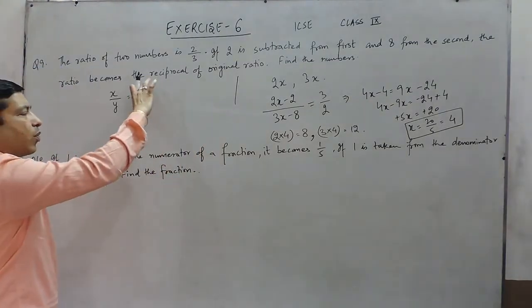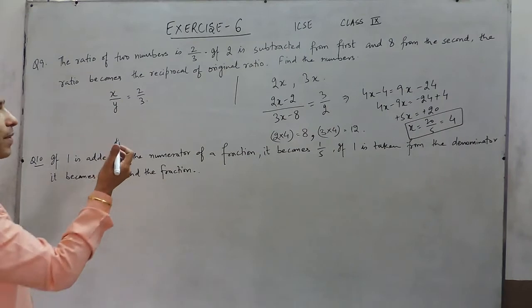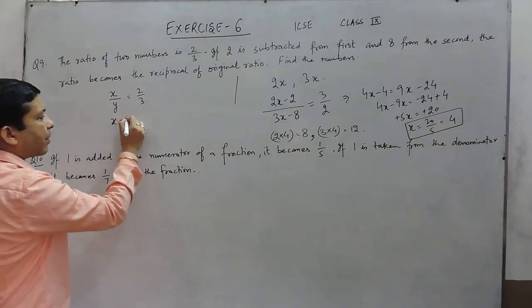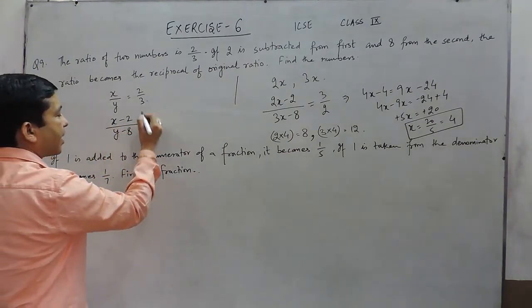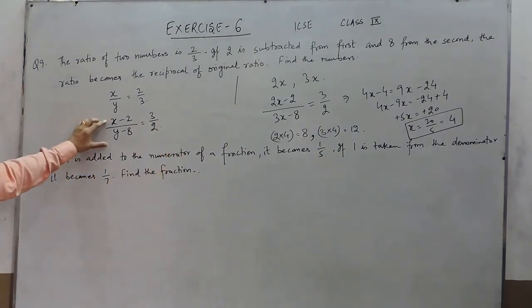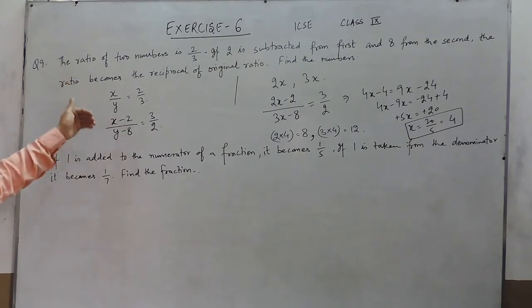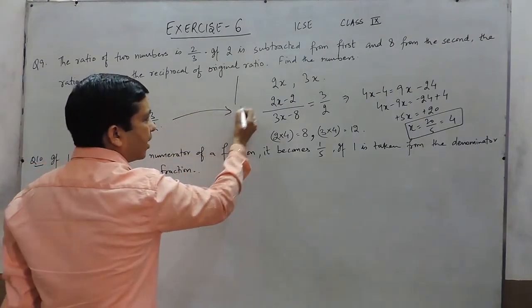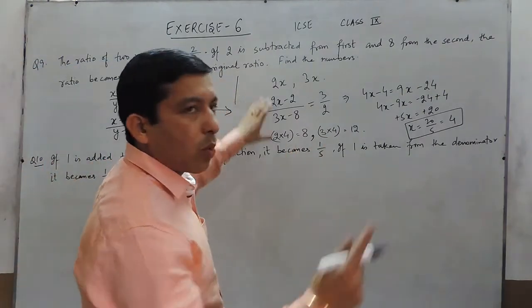If we take x upon y as 2 upon 3, then from the numerator if we subtract 2 it becomes x minus 2, and from the denominator we subtract 8, that is y minus 8, and the ratio becomes the reciprocal, that is 3 upon 2. Here we have 2 equations, and we can put the value of x or y from one equation into the second equation to solve it — we will get the same solution. This comes under linear equations with 2 variables, while the earlier method used only 1 variable.